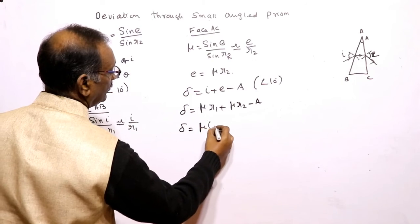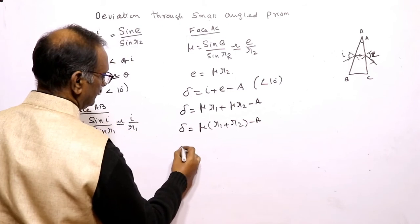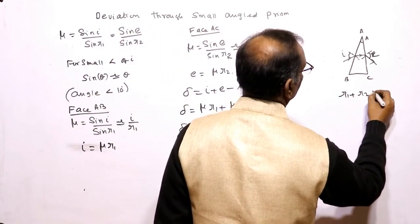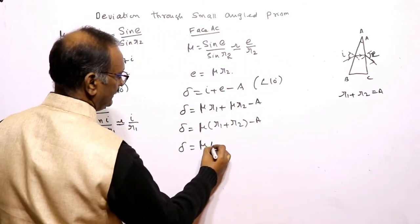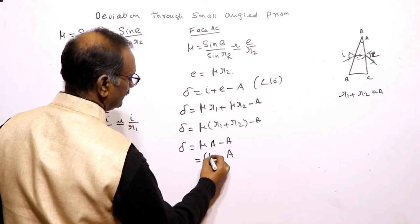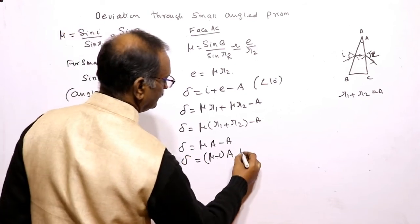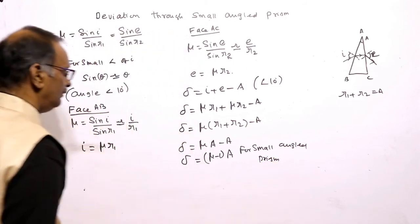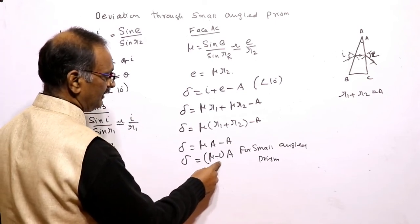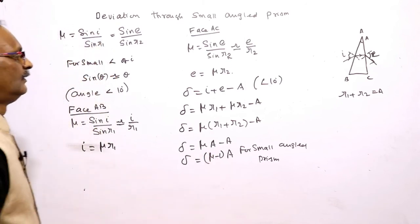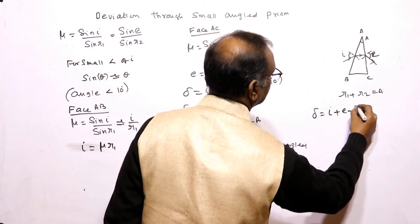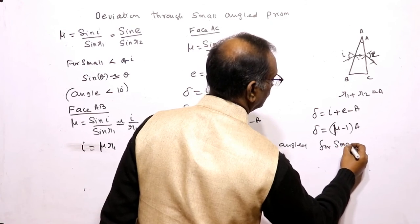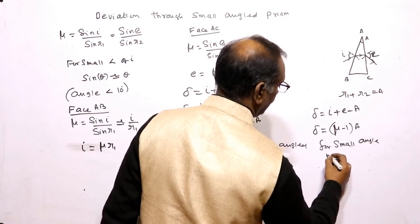We can write delta is equal to mu into (R1 plus R2) minus A. As we know, R1 plus R2 is equal to angle of prism A. So delta is equal to mu times A minus A. Taking A outside, this becomes delta equal to (refractive index minus 1) multiplied by angle of prism A. For small angled prism, angle of deviation equals (mu minus 1) into A.